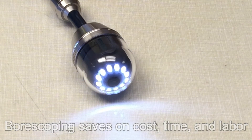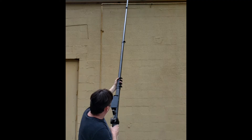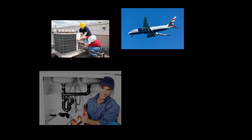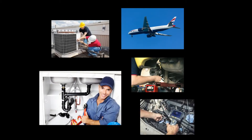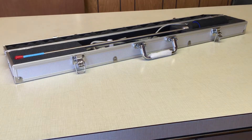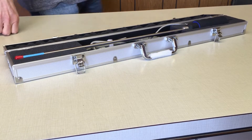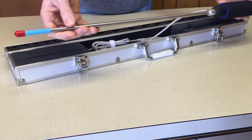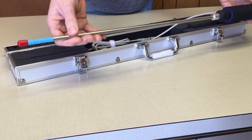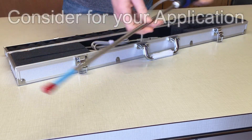Boroscopes are used in many industries and applications, from diagnosing simple problems in one's home, to applications in industrial, automotive, aviation, home inspection, plumbing, HVAC, and others. Your application will determine the features your boroscope will require. Things you need to consider are length, diameter, durability and quality, and other factors such as whether it needs to be waterproof or oil-proof, among others.